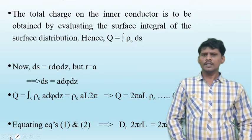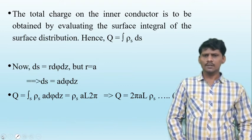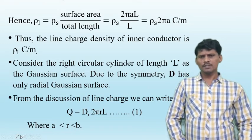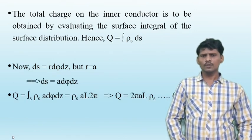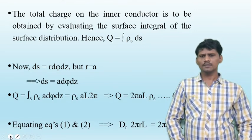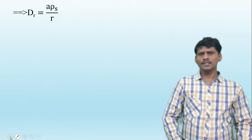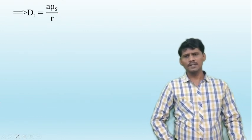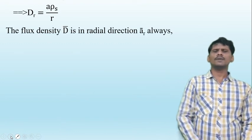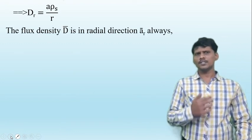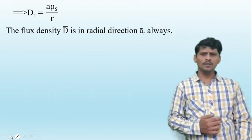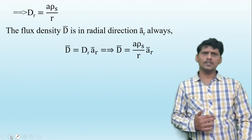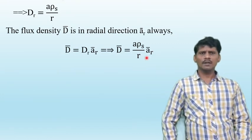Equating equation 1 and equation 2, we get D_r equals a times rho_s divided by r. The direction of the electric flux density is the radial direction, so D-bar equals D_r times r-hat. Substituting the value of D_r, we get D-bar equals (a times rho_s divided by r) times r-hat.